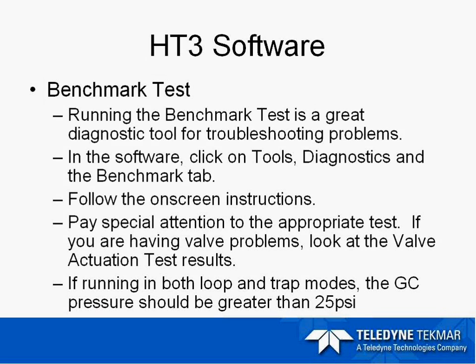A common problem with the benchmark test is if your GC pressure is not set up correctly. If you are running both loop and trap modes, the GC pressure should be greater than 25 PSI across the transfer line. If this pressure is not set up correctly, we typically see the bypass valve failing — and this would only apply if you have the dynamic option.